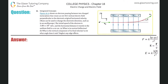Number 61, Integrated Concepts. Figure 18.57 shows an electron passing between two charged metal plates that create a 100 newton per coulomb vertical electric field perpendicular to the electron's original horizontal velocity. The initial speed of the electron is 3 times 10 to the 6 meters per second and the horizontal distance it travels in the uniform field is four centimeters. Letter A: what is its vertical deflection? Letter B: what is the vertical component of the final velocity?